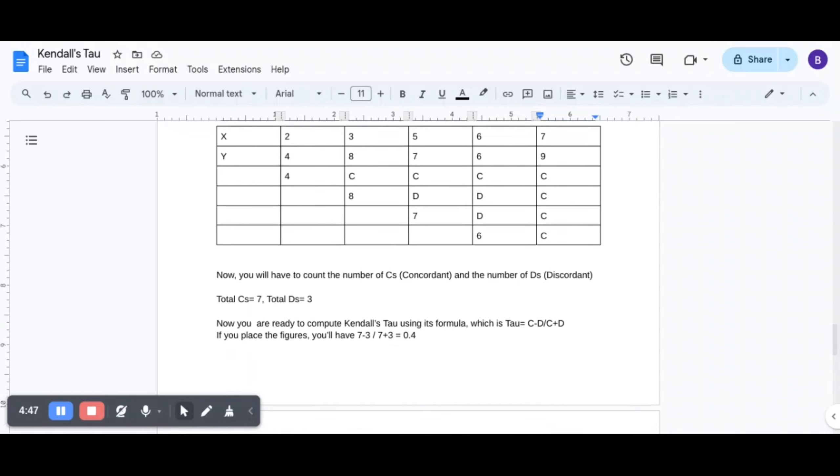And 6, C. Okay? So now number of C's we have how many? 7. Number of D's we have 3.